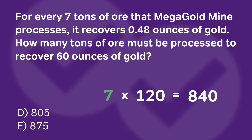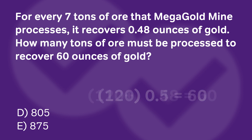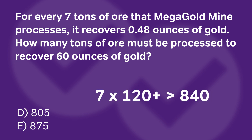You might say: that's not fully satisfying — 840 is right between two remaining answers. But that's exactly where shortcut two comes in. We were finding what number times one half gets you to 60, and the answer was 120. But 0.48 is a little bit smaller than 0.5, so we need a number a little bit greater than 120. That means 7 times something greater than 120 pushes the result above 840. There's only one answer choice greater than 840: answer choice E, 875.